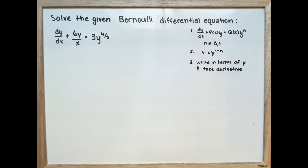Solve the given Bernoulli differential equation: dy/dx plus 6y over x is equal to 3y to the power of 4 over 3.